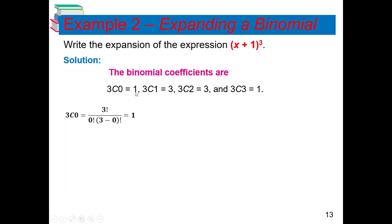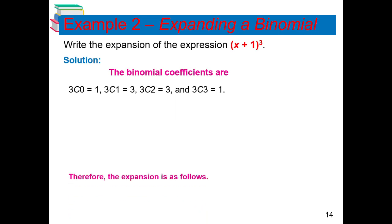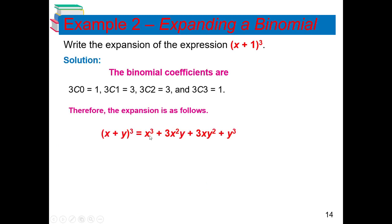We know 3C0 = 1 immediately since numerator and denominator cancel. 3C1 = 3!/1!·2! = 3. 3C2 = 3!/2!·1! = 3. And 3C3 = 3!/3!·0! = 1. So our coefficients are 1, 3, 3, 1. The formula for (x + y)³ gives: x³ + 3x²y + 3xy² + y³.